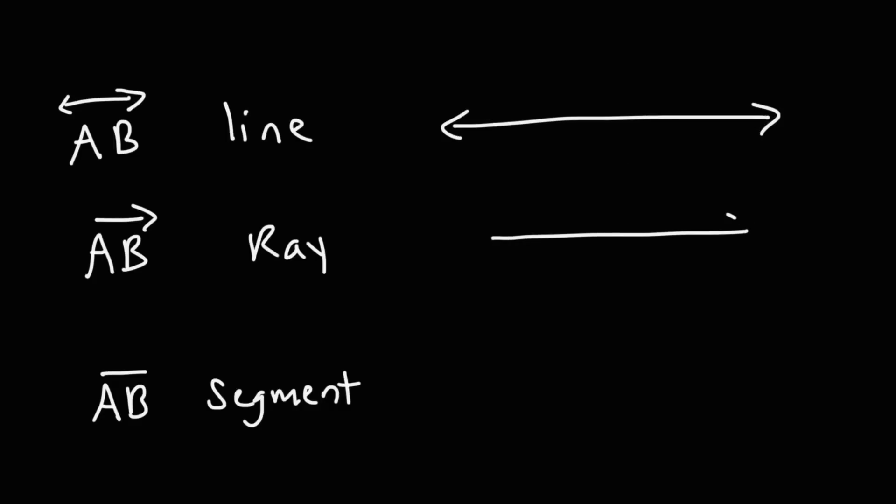If you see this, this means line AB. If you see this with one arrow, it means ray AB. So a line can go in both directions. A ray points in one direction. And if you see this, this is segment AB. So this is a line. This is a ray. A ray has a beginning, but then it continues forever in the other direction. A segment is limited in life. It has a beginning and an end.